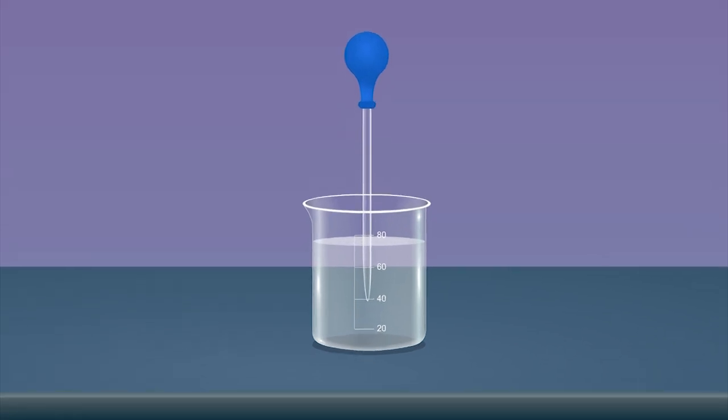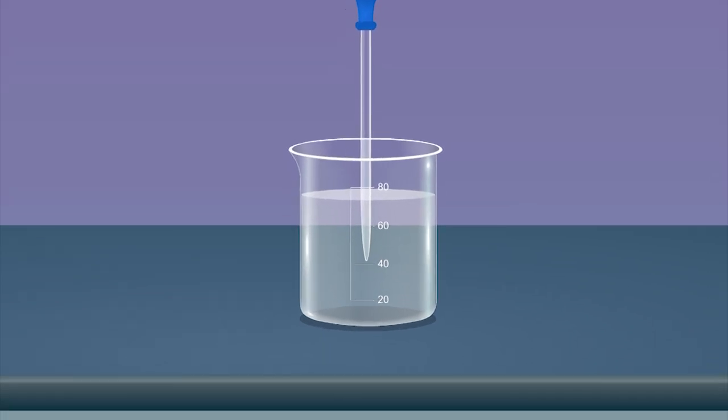Observe the escaping air bubbles. Release the bulb, keeping the nozzle still inside the water. When the bulb is released, the water from the beaker rushes into the dropper.